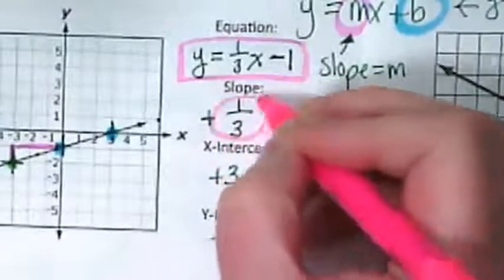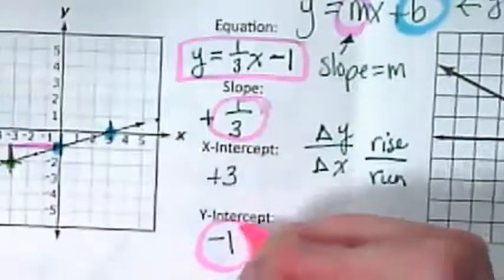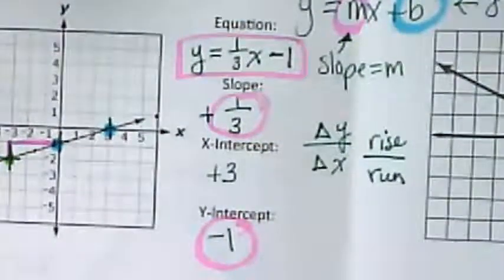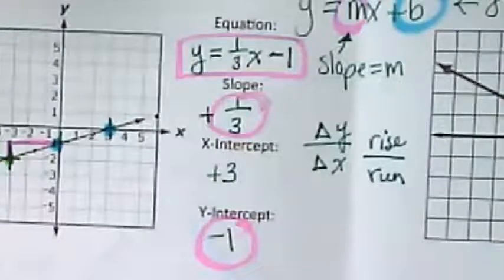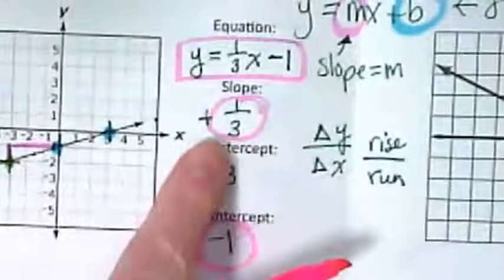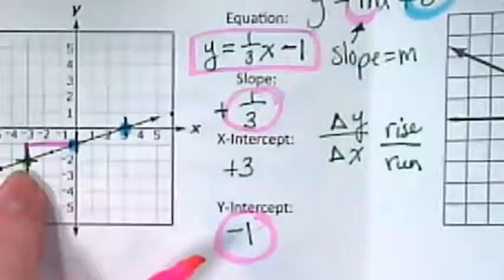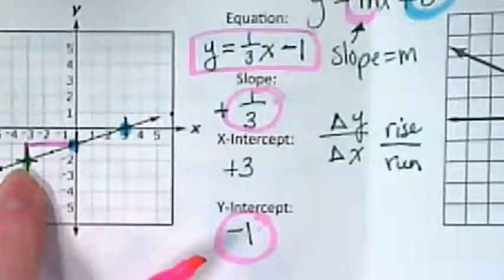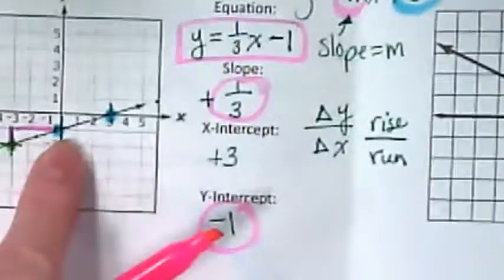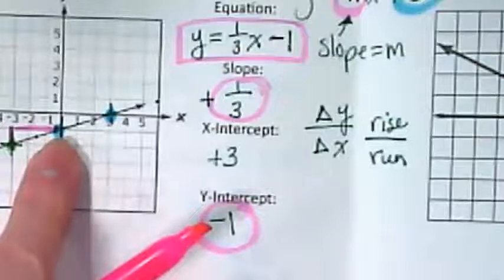This was my m. This is my b. I got this from counting my rise over my run. I got this by simply looking at where the line crosses the y-intercept.